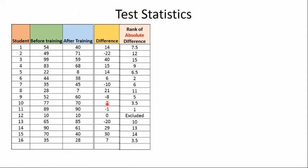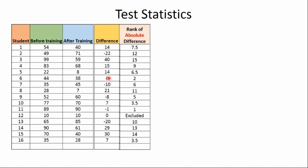The next value is 6, which gets rank 2. The next value is 7, and since 7 appears twice, we assign mean ranks: individually they would be ranks 3 and 4, so mean rank is 3 plus 4 divided by 2, which equals 3.5. We write 3.5 and 3.5 for both. In this way we assign ranks to all differences ignoring the plus or minus sign.